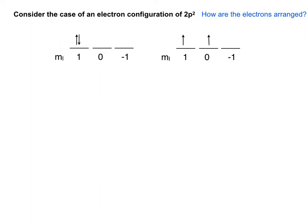Remember, a P orbital has an l quantum number of 1, which means m_l goes from -1 to 1, giving us three different P orbitals. In the case on the left, the electrons are spin-paired in the first P orbital; on the right, the electrons have parallel spin in two different P orbitals.